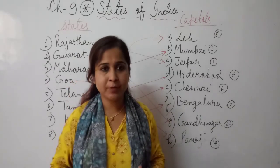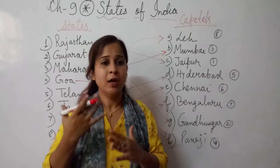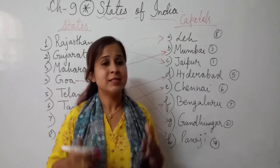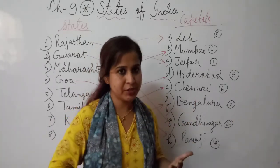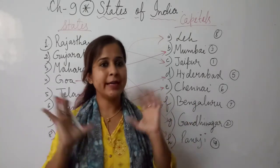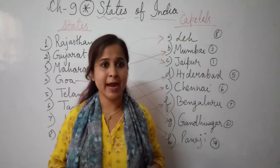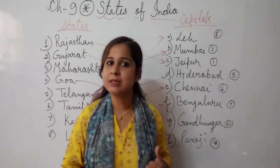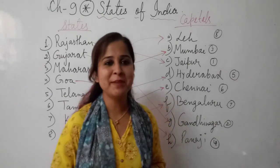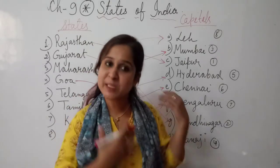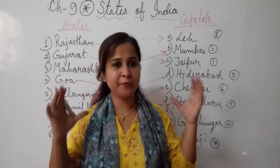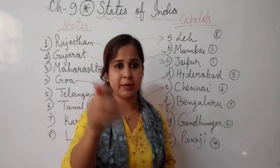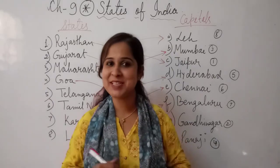I hope all of you have enjoyed this chapter and have come to know interesting facts about our country — it is the seventh largest country, located in the southern part of Asia, has 28 states, 9 union territories, and each state has its own capital. I hope you liked my explanation. If you find any difficulties or doubts, drop your question in the comment section. Take care, have a nice day, bye-bye.